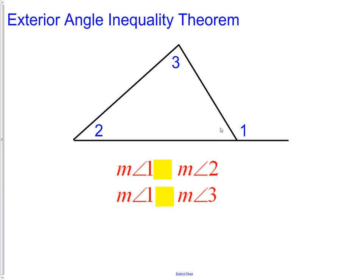The Inequality Theorem tells us simply that angle 1 is bigger than angle 2, and angle 1 is also bigger than angle 3. This hopefully should make sense because when we learned before, angle 1 was equal to 2 plus 3. Therefore, it must be logical that 1 must be bigger than 2 and 3 individually if it is equal to their sum.